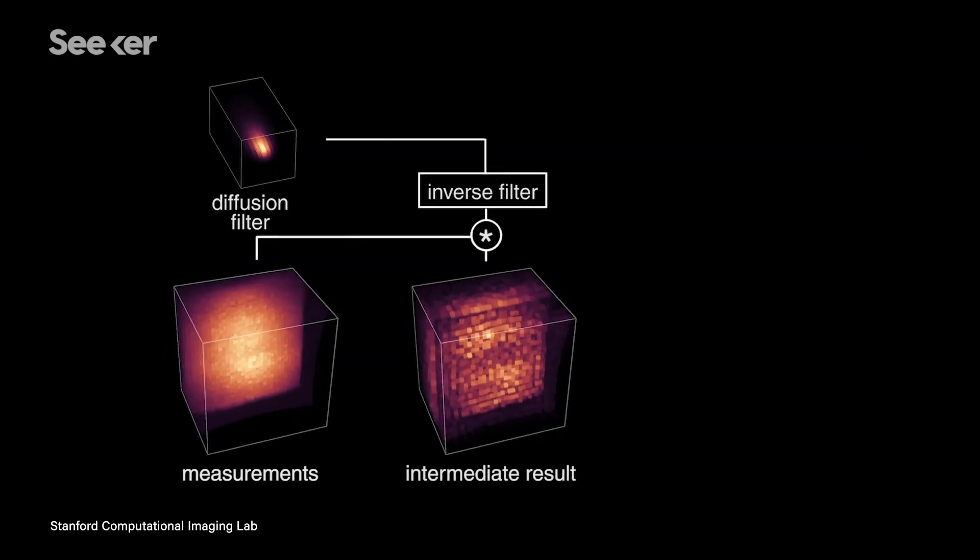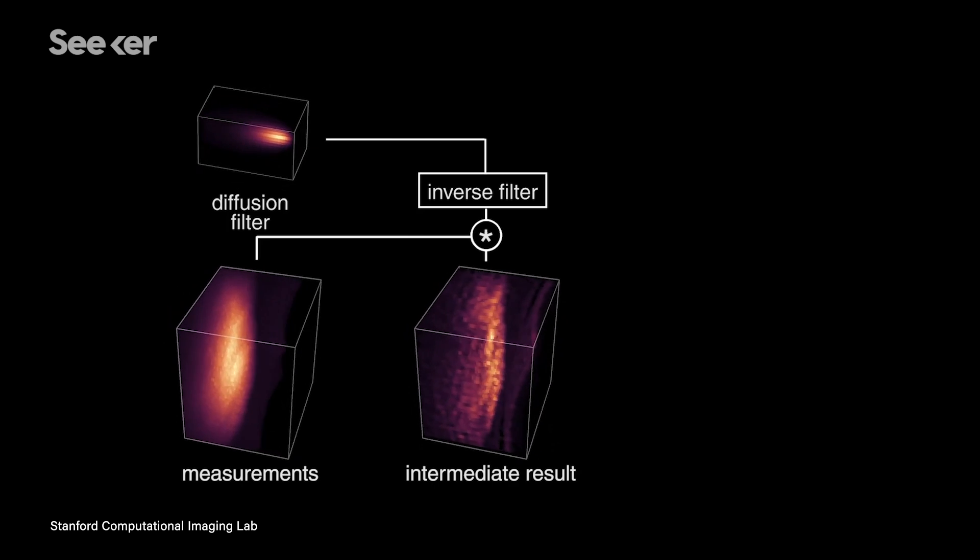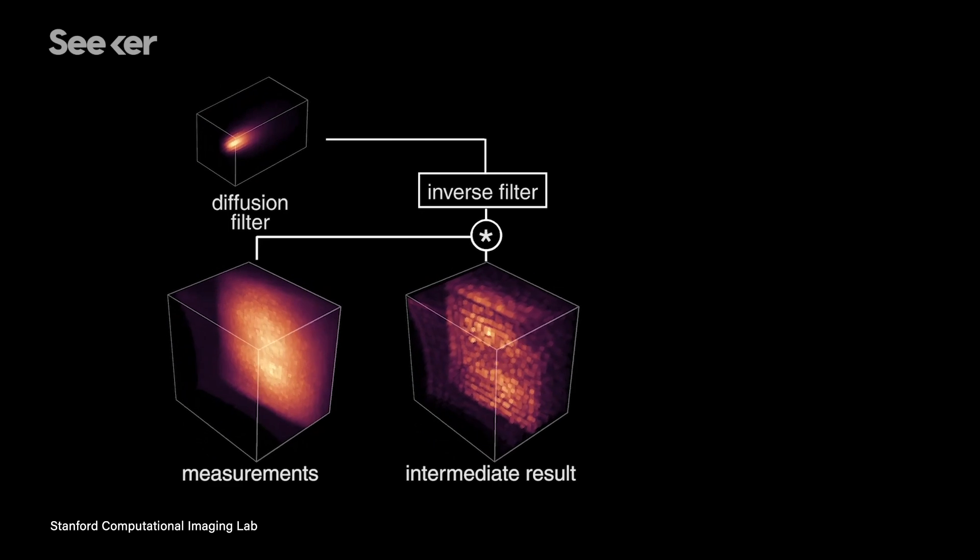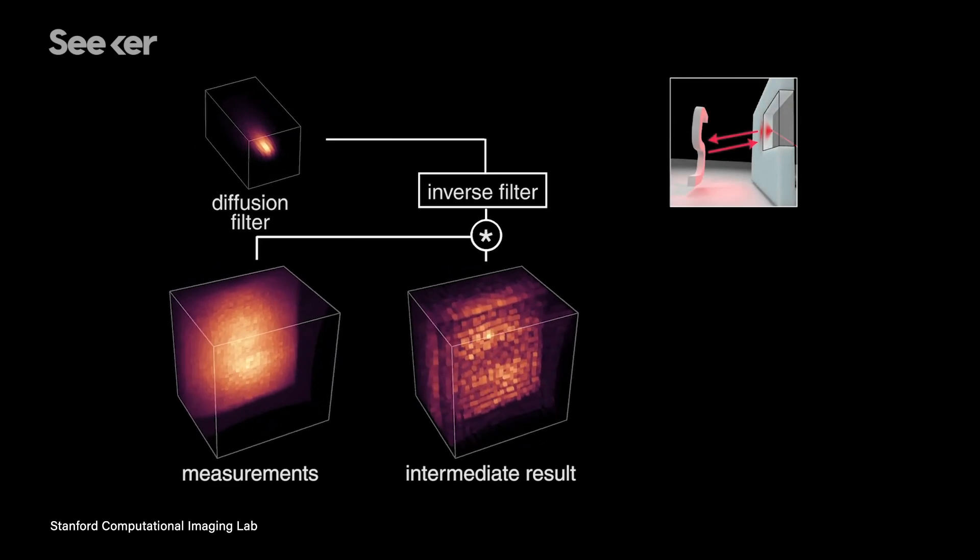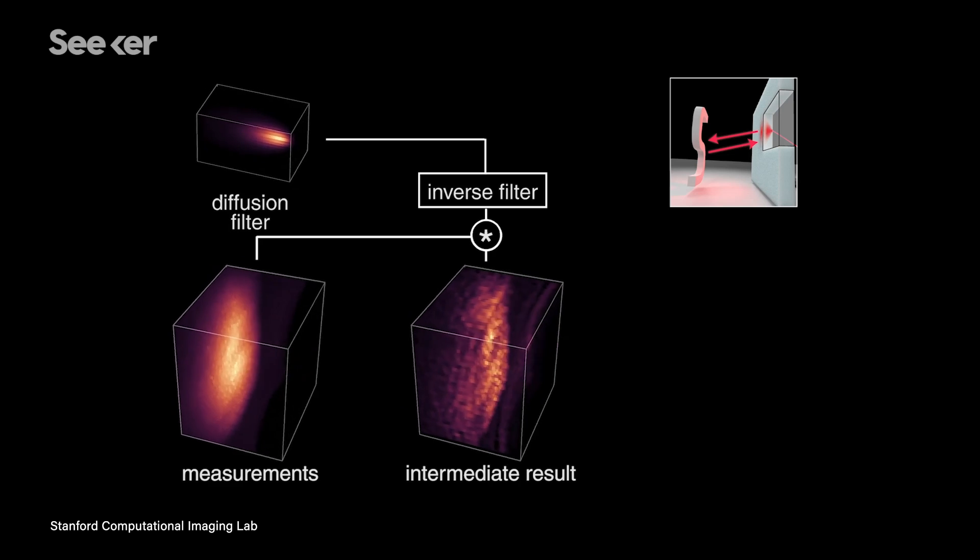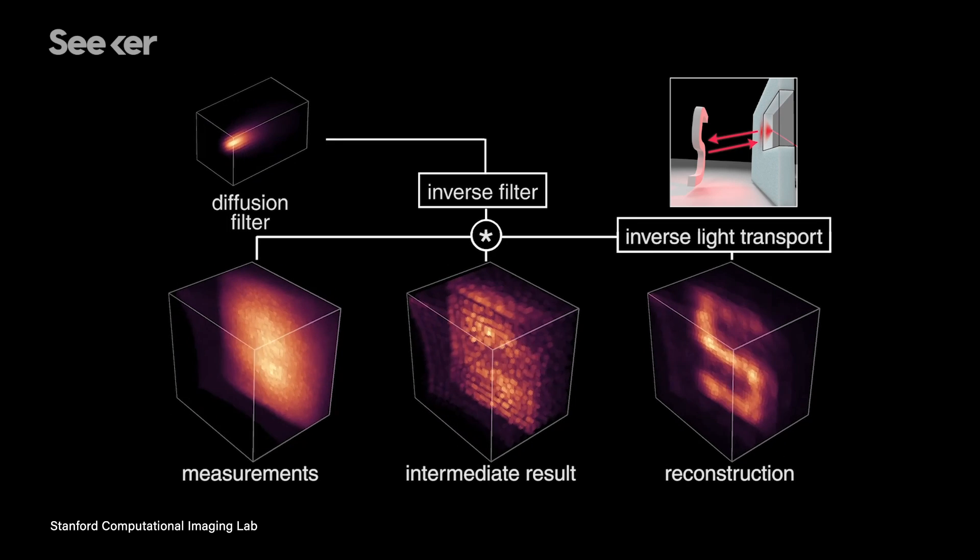In order to get a 3D image, this process has to be done multiple times by scanning a series of points on a grid through a process the team calls confocal scanning. These data points then work together to effectively create a blurry map of the image. Using this, researchers can then apply a specific set of algorithms and light filters to reconstruct the completed 3D image of the target object.